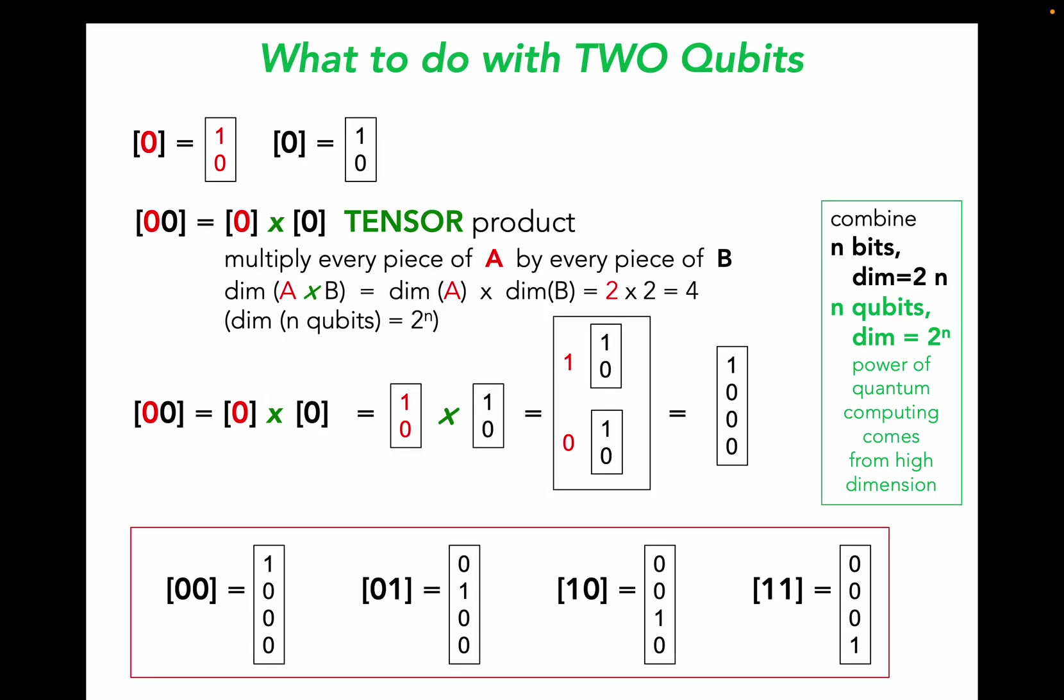So what can we do with two qubits? If we have these two qubits zero and zero we can combine them to make a double zero. When we do that the way they combine is by a tensor product. What we wind up with, although we started with a two-dimensional system, we now have a four-dimensional system. When we combine n bits in a computer the dimensionality of what we get is 2 times n. But for n qubits the dimension we get is 2 raised to the n. Part of the power of quantum computing results from this higher dimensional increase as we combine qubits together.